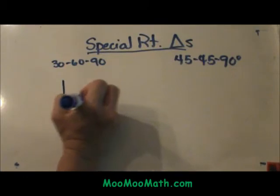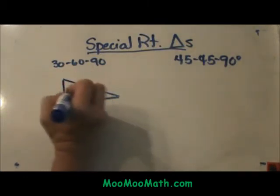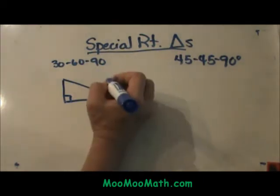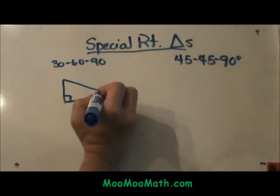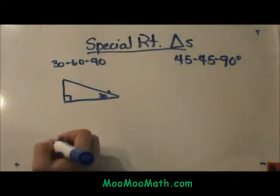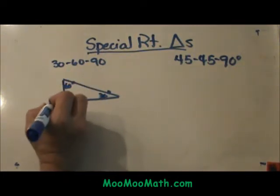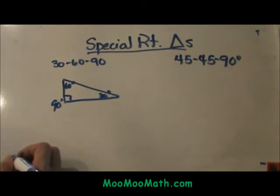So let's draw a 30-60-90 triangle or one that represents it. If this is my triangle, the angle down here that is the smallest is my 30 degree angle. The other acute angle would be my 60 degree angle, and of course my right angle is my 90 degree angle.